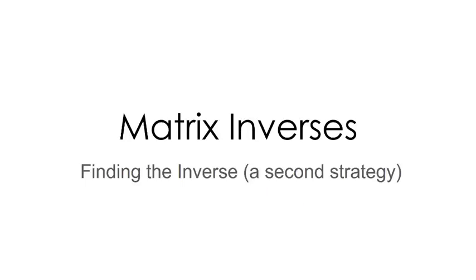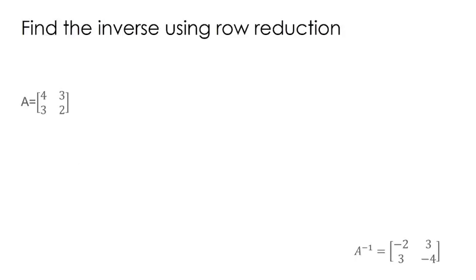In this video, we're going to look at a second strategy for finding matrix inverses, and we're going to use row reduction to do that. I've got a matrix A right here, and in my previous video, we found that the inverse of this matrix is right here. I put that down in the bottom corner so we can check ourselves, and then at the end of this, we'll know if we're right or wrong.